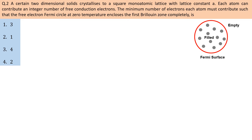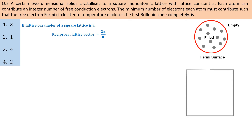For a monoatomic square lattice with lattice constant A, we draw the Fermi surface and the first Brillouin zone. For a square lattice with parameter A, the reciprocal lattice vector is 2pi/A, and the first Brillouin zone is defined from minus pi/A to plus pi/A.